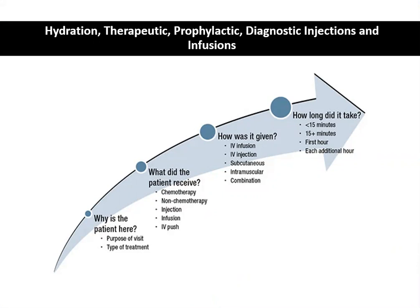Now to the more complex part of the medicine section. We have codes for hydration, therapeutic, prophylactic, diagnostic injections and infusions, and chemotherapy and other highly complex drug or biologic agent administration. This area starts with lots of subsection notes on pages 730 and 731. There are important definitions you need to know: an injection delivers a dose in one shot as opposed to over time, while an infusion is IV fluids and/or drugs given for diagnostic or therapeutic purposes over a period of time.